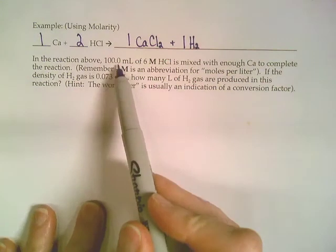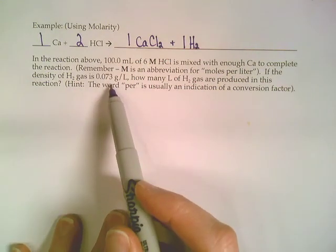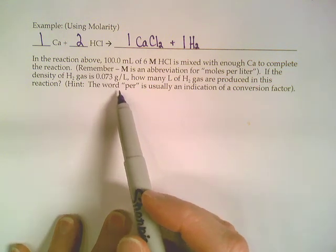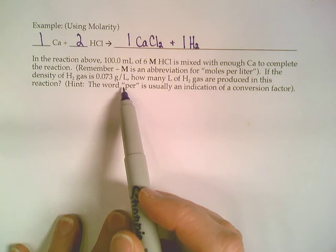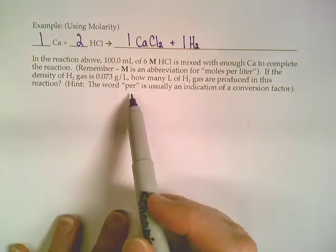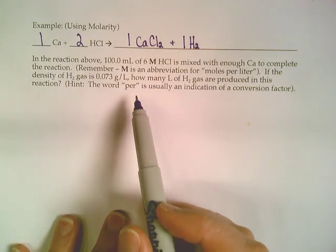There's a lot of numbers given to us: the 100, the 6, and the 0.073. Now when you're deciding where should I start, which number should I start with, when you either see the word per or if you were to read the stuff out loud and say the word per, those are conversion factors. You don't want to start with those.